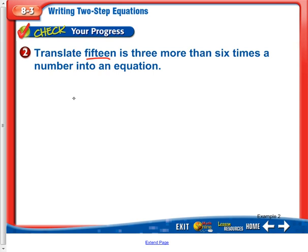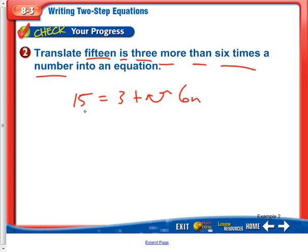So we have '15 is three more than six times a number.' 'Than' tells us to flip it. Six times a number: we have six n. So let's rewrite it: 15 equals six n plus three. Again, because 'than' tells us to flip it.